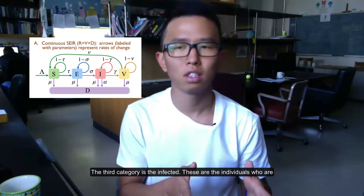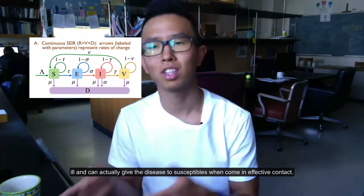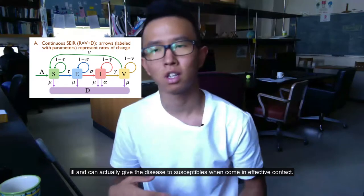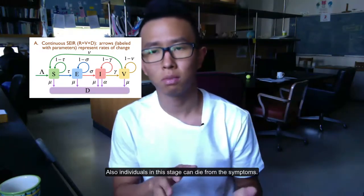The third category is the infected. These are the individuals who are ill and actually can give the disease to susceptibles when they come in effective contact. Also, individuals in this stage can die from the disease through its symptoms.